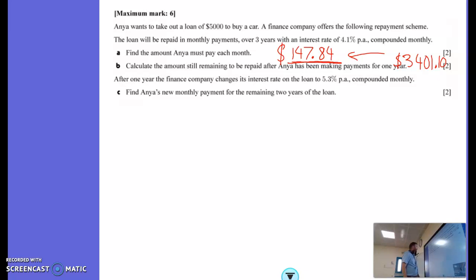On to part C. Find Anu's new monthly payment for the remaining two years, if after that year. This is going to be useful. That's going to lead into this question. She owes this much with two years remaining.